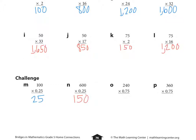Looking at O, 240 times 0.75. So 240 is how many groups of four? 60 groups of four. Or one fourth of 240 is 60. So what's three fourths of 240? 180.